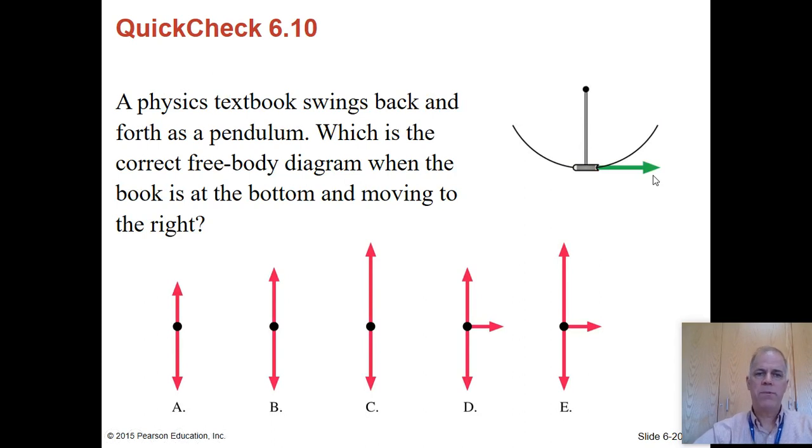Physics textbook swinging like a pendulum. We want to know which free body diagram describes it. And the answer is C. Now, the deal is, first off, there does not need to be any more force to keep it going to the right. It's already moving to the right. So inertia will keep it moving to the right. Doesn't require any extra force. So D and E are out of the question here.